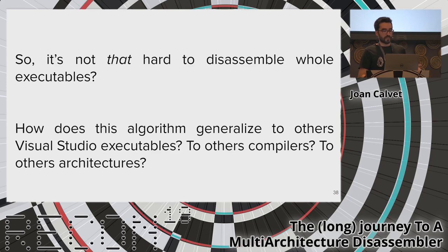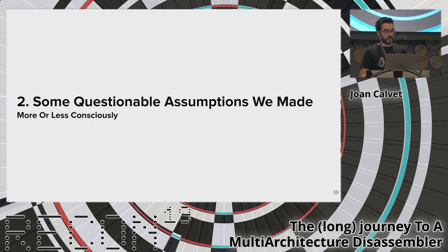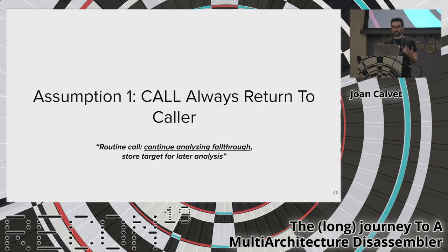We might think it's not particularly hard to disassemble real executables — just implement an instruction disassembler and use it to guide the general logic. But how does this recursive algorithm generalize to executables from other compilers or for other architectures? Beyond the usual control flow problem with recursive disassemblers, we made a series of questionable assumptions during our manual disassembly, which I will now expose.